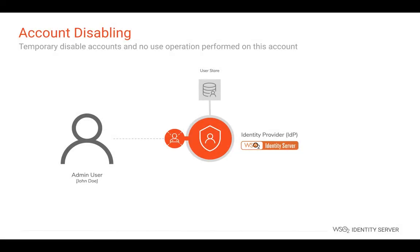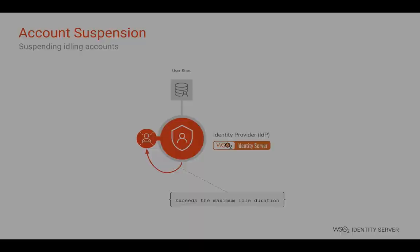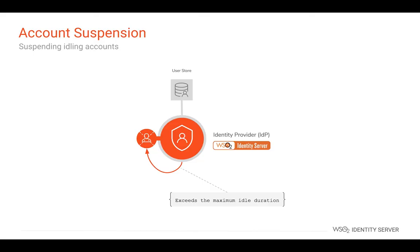Similarly, privileged users can disable user accounts for longer durations. Disabled user accounts can only be enabled by privileged users. Privileged users can also define how long a user account can be idle. When a user account exceeds this idle duration, the user account will be automatically suspended.